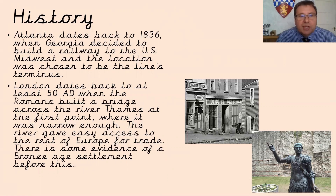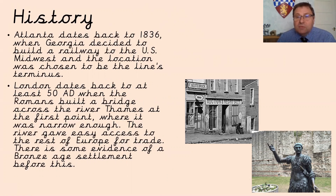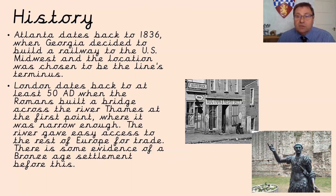Looking at history: Atlanta dates back to 1836 when Georgia decided to build a railway into the US midwest, and the location was chosen to be the line's terminus — the end of the line. Having a railway meant people could get goods and services in and out, so a city started building around the railway terminus. Atlanta is in southern America, which was part of the slave belt where black people from Africa were brought and sold as slaves — but we covered that in English and history.